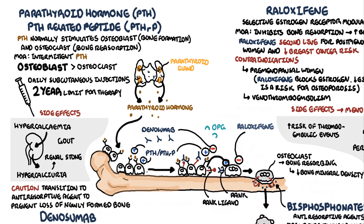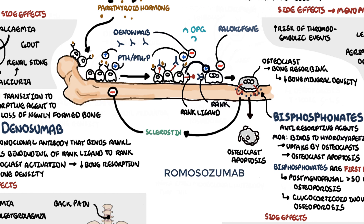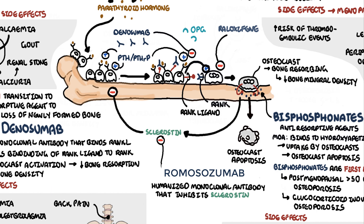Another class used to treat osteoporosis is sclerostin inhibitors. Sclerostin is a protein secreted by osteoclasts to reduce bone formation by interfering with the proliferation and function of osteoblasts. Romosozumab is a humanized monoclonal antibody that inhibits sclerostin, thereby allowing osteoblasts to build more bone and increase bone density.